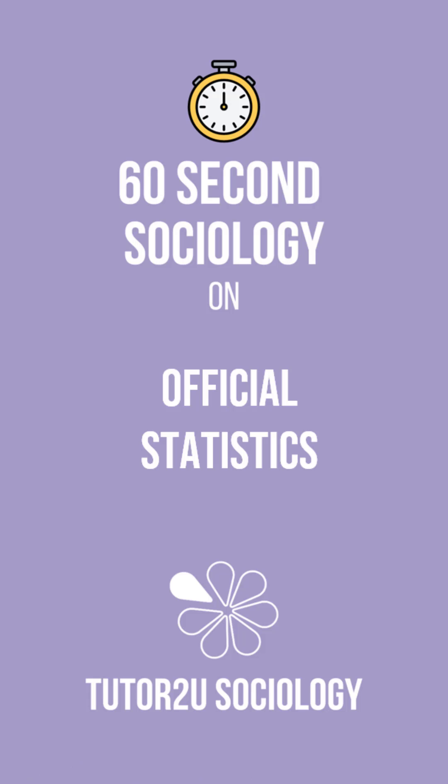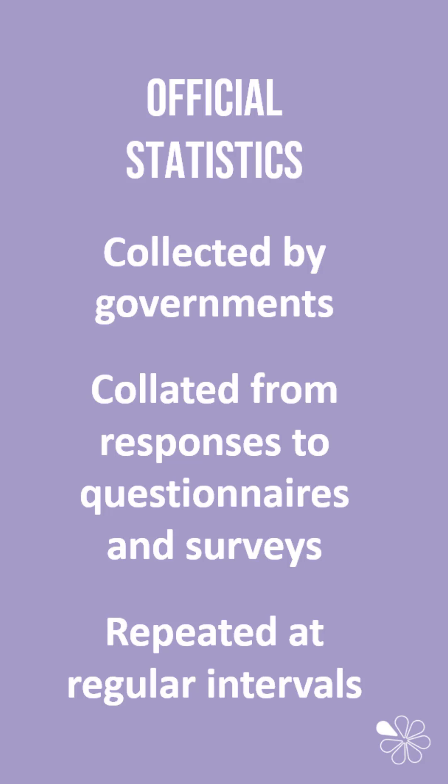In this 60 Second Sociology we're going to look at official statistics. Official statistics are data that is collected by governments and they're usually collated from responses to questionnaires and surveys. These questionnaires and surveys are repeated at regular intervals to make sure that official statistics are relatively up to date.